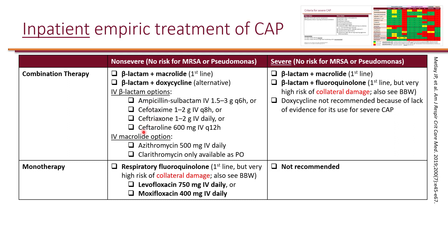Here are the IV beta-lactams that are listed. Ceftaroline is listed, and while it is a beta-lactam active against MRSA, the guidelines don't recommend using ceftaroline specifically for MRSA coverage because of the lack of clinical trials in MRSA pneumonia. There hasn't been proven efficacy of ceftaroline for MRSA pneumonia yet, so its only use in the guideline is the same as ceftriaxone — to cover Streptococcus pneumoniae and common organisms that cause pneumonia, but not MRSA. Azithromycin is the only macrolide available as IV; clarithromycin is only available as PO.